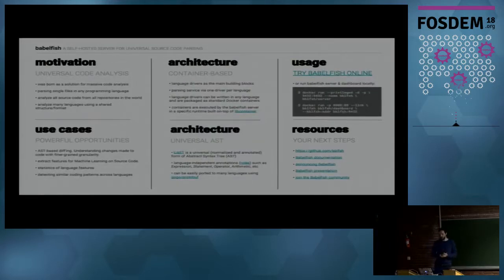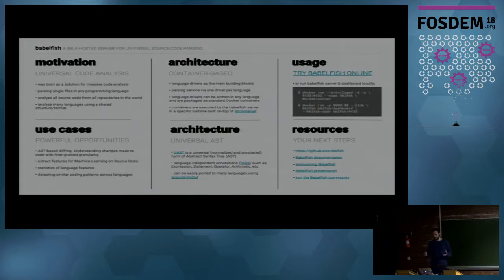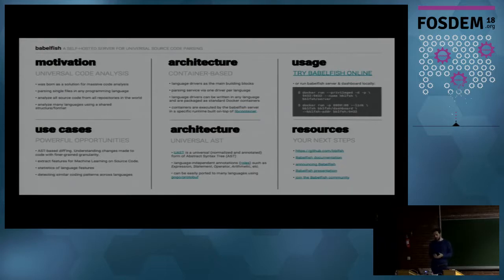Another project is Babelfish, which is a bit different — it's a scalable parser infrastructure. It wraps native parsers inside containers that you can schedule across a cluster, and exposes a uniform gRPC API. This way you can extract a lot of information from source code in a very uniform fashion. It has drivers for many different languages and produces something called a Universal Abstract Syntax Tree — a native syntax tree of the language annotated with language-independent information for later analysis stages.